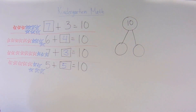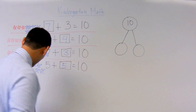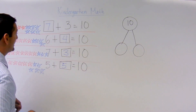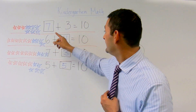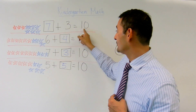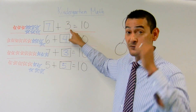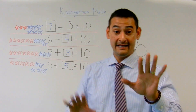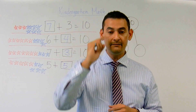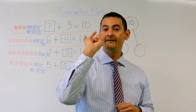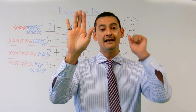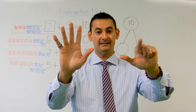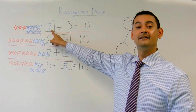Now let's take a look at another way we can do it. So here we have something plus 3 equals 10. I'm going to put 3 in my head — put 3 in your head — and I'm going to stop at 10 using my fingers. Watch. 3, count up: 4, 5, 6, 7, 8, 9, 10. How many do I have? 1, 2, 3, 4, 5, 6, 7. Is that 7? Absolutely.